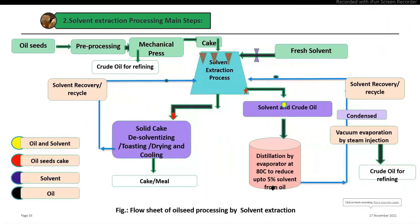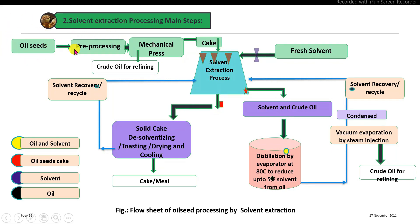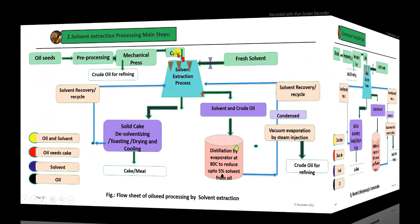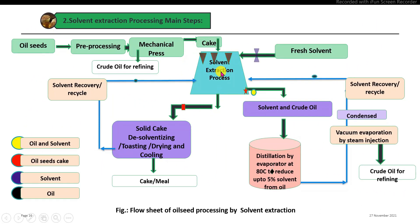In the solvent extraction method, several processing steps are involved. The oil seeds are pre-processed in the pre-processing section, then passed into the mechanical pressing process using expeller machines to extract oil. After that, the resulting cake is fed into the solvent extraction process, which may be operated batch-wise or continuously, with cakes continuously fed into the solvent extractor.